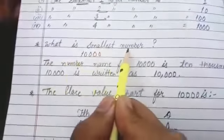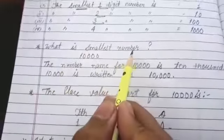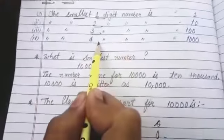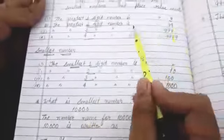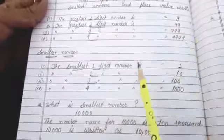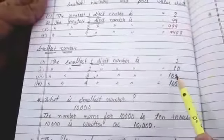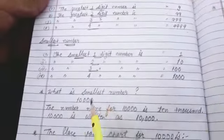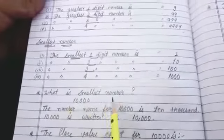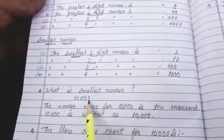What is smallest number? Now we have done greatest number and smallest number. If we have seen 0 to 9, what is the smallest number? But smallest digit number, 10,000 is smallest number.